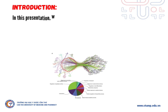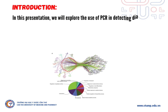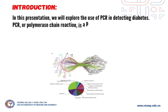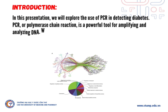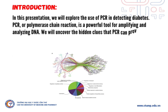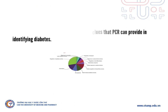Introduction. We will explore the use of PCR in detecting diabetes. PCR is a powerful tool for amplifying and analyzing DNA. We will uncover the hidden clues that PCR can provide in identifying diabetes.